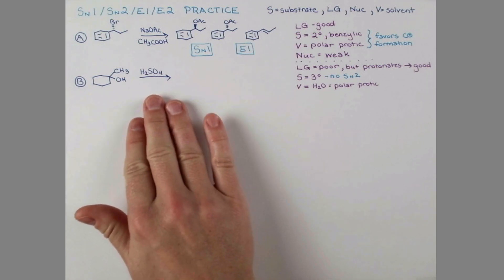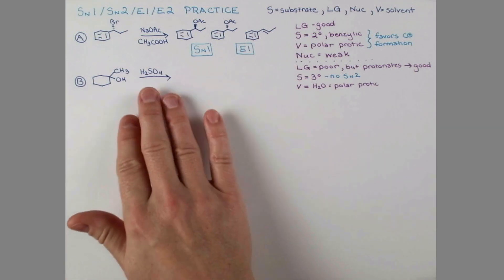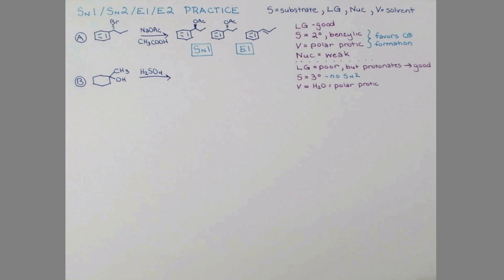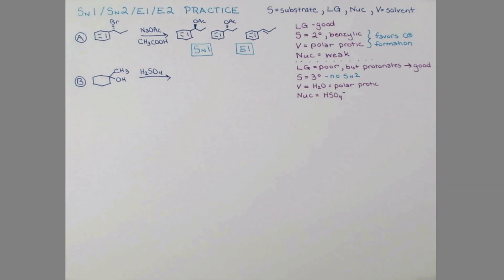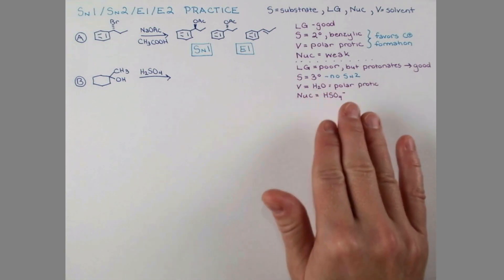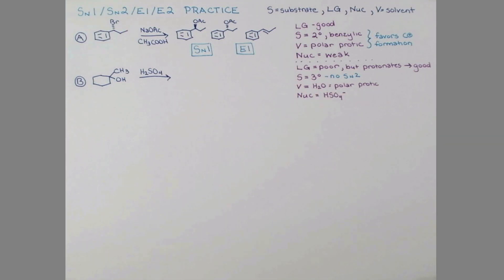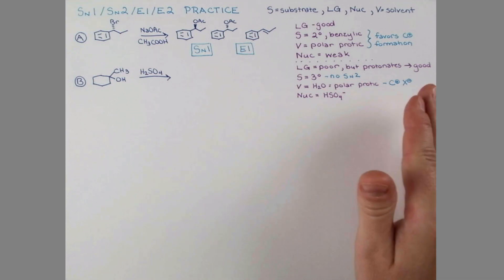The substrate - this alcohol has one, two, three groups coming off of the adjacent carbon. It's a tertiary alcohol. This is good news because we can eliminate one mechanism - SN2 cannot occur with tertiary substrates, we can't get backside attack. Sulfuric acid, even when concentrated, is a solution in water, so we do have some water in this reaction and water is a polar protic solvent. Sulfuric acid is a much stronger acid than the hydronium ion.